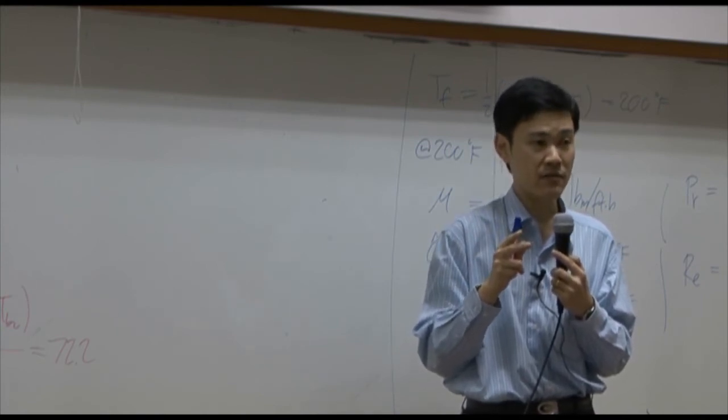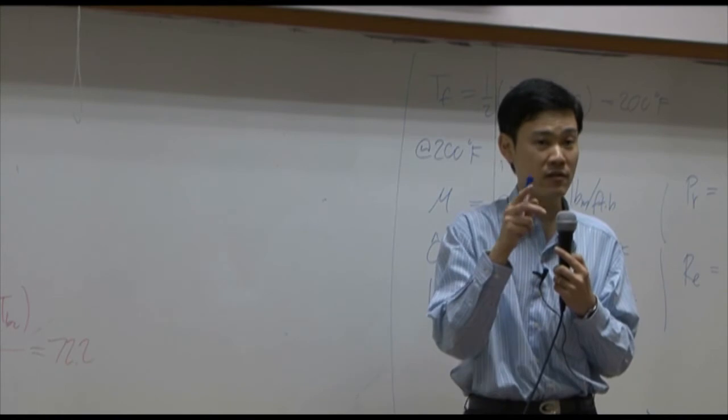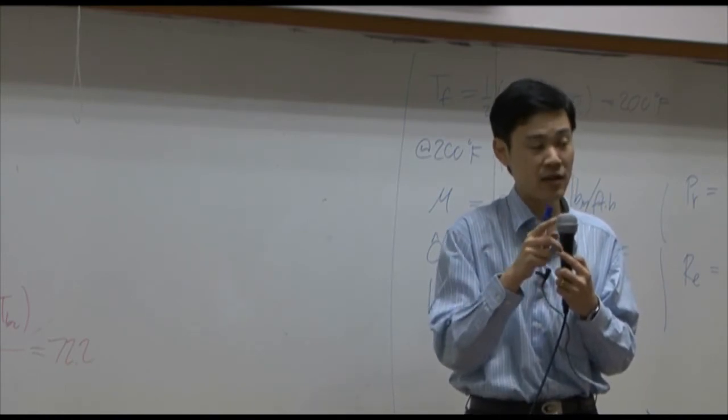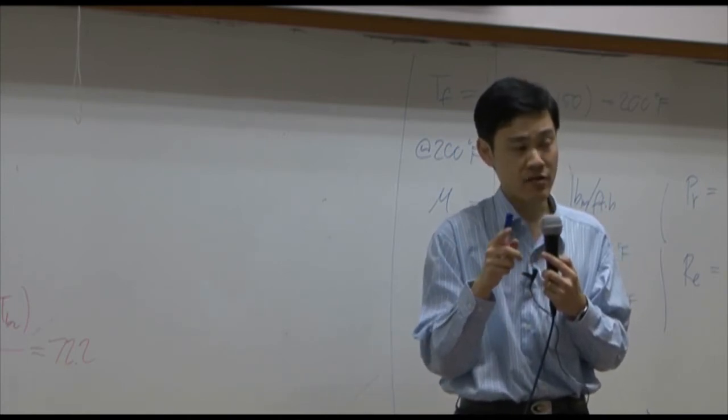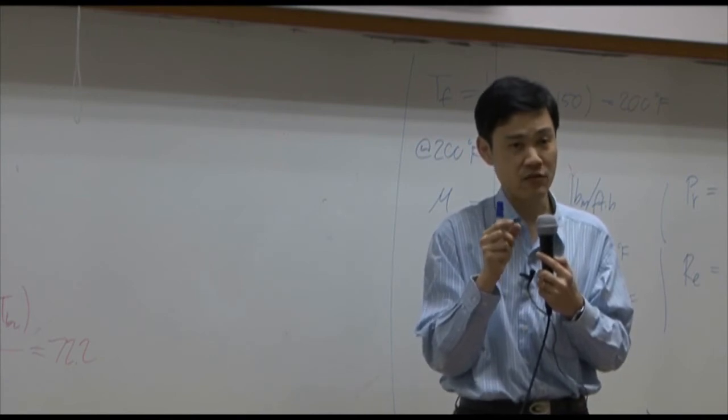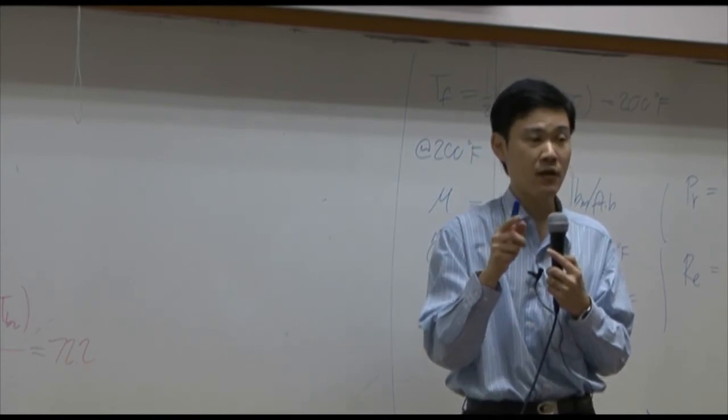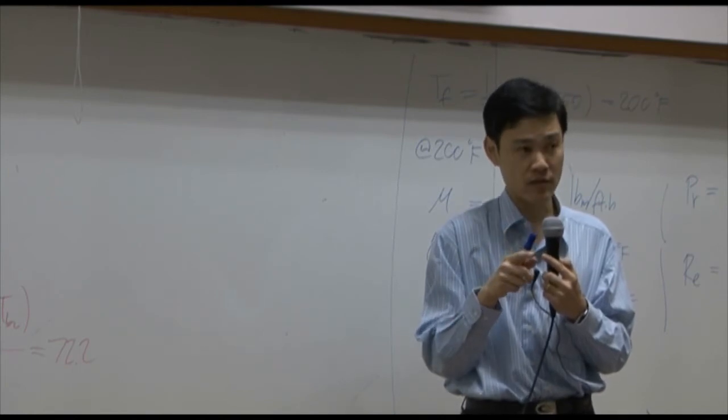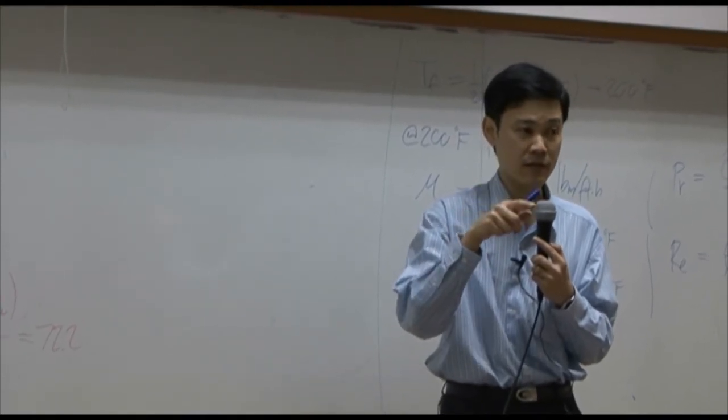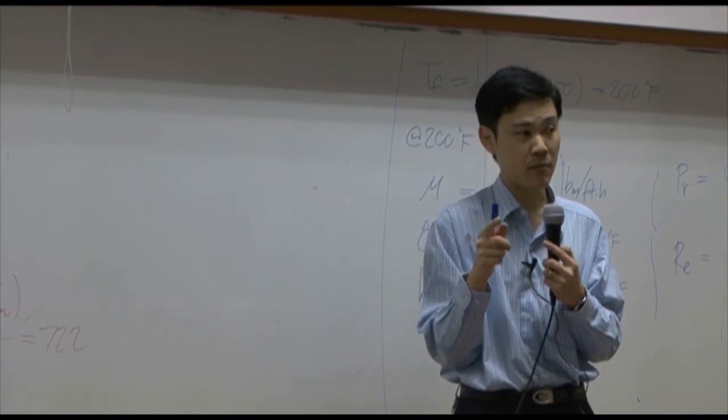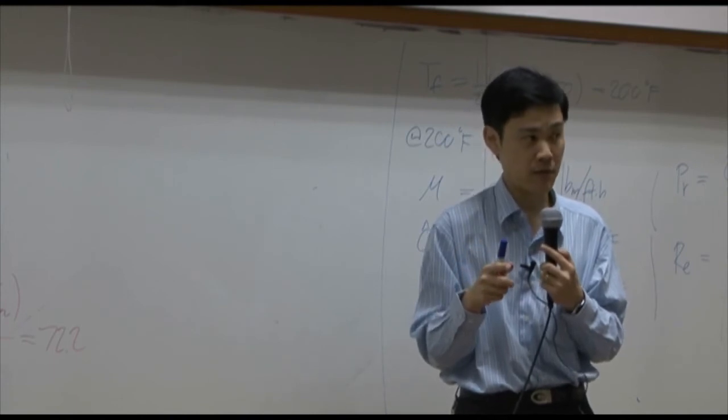The way we set up the shell balance is the same as when we set up the shell balance for momentum. That means when you set up the shell balance, you need to look into your system, find direction where temperature is changing. In that direction, the shell is supposed to be thin. The thickness of the shell in that direction is supposed to be delta or something. Once you set up the shell balance, you integrate it once, you get differential equation representing the flux. Then you can convert the flux into temperature using definition of combined flux. You integrate it twice, you get temperature profile.